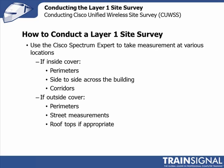For outdoor environments, it's always desirable to walk the perimeter first — the perimeter of where you want to provide coverage. Then you'd look at a street map and walk the streets. If you're deploying a mesh network from the top of buildings, you'd need to go on top of the buildings and take measurements there as well.